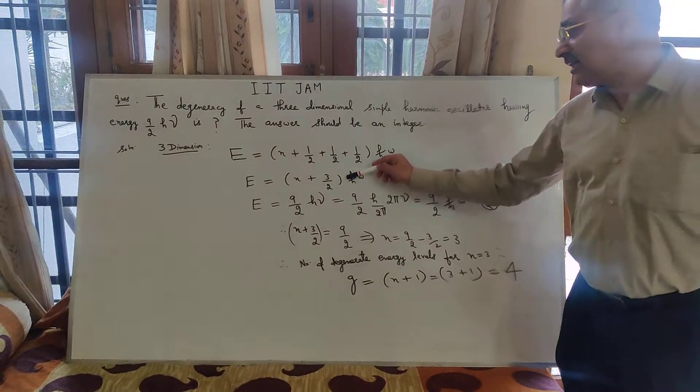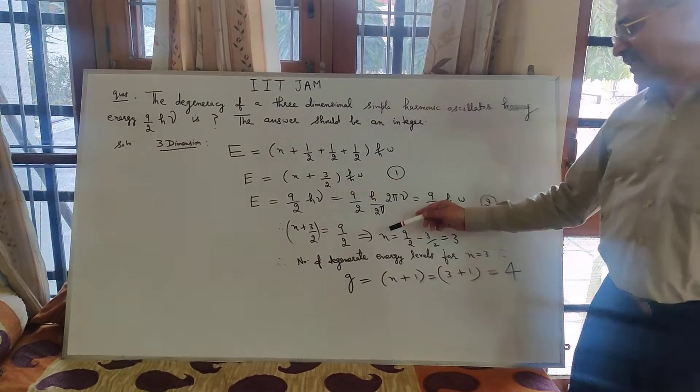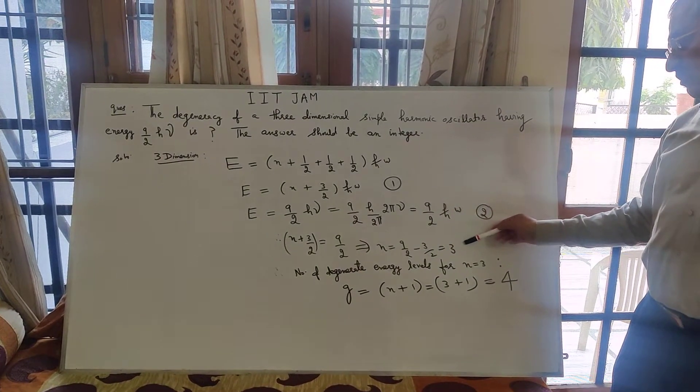Here h bar omega has coefficient 9 by 2. Here h bar omega has coefficient n plus 3 by 2. So, simplifying, n will come out to be three.